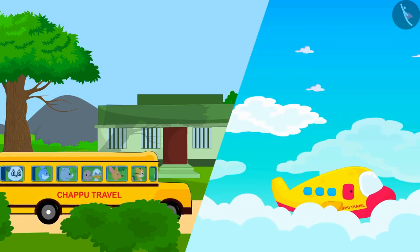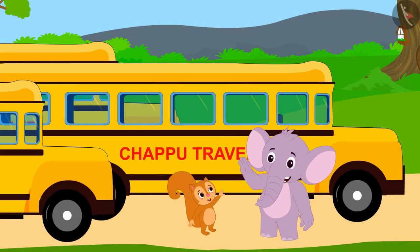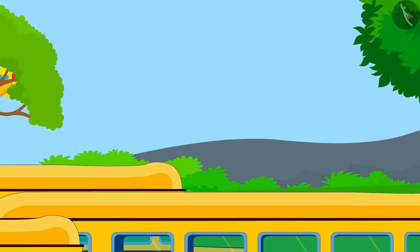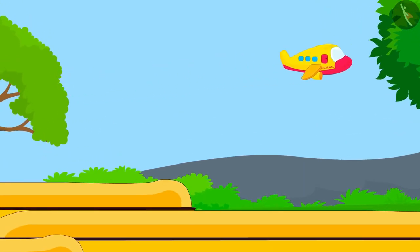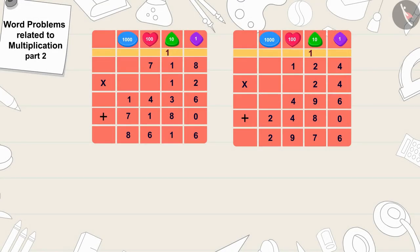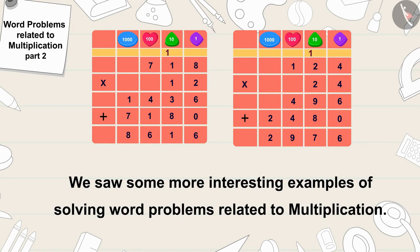Chappu Travels achieved a lot of success in a very short period of time, and with more enthusiasm Chanda and Appu started looking for ways for the villagers to travel in modern ways. In this video we saw some more interesting examples of solving word problems related to multiplication. In the next video we will see more funny word problems related to this.